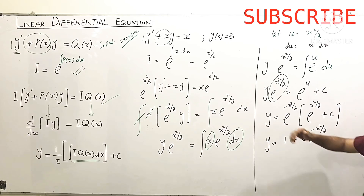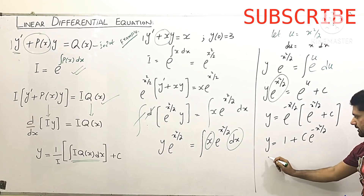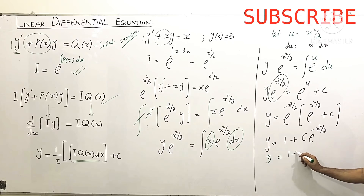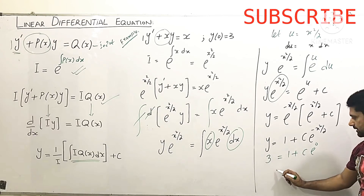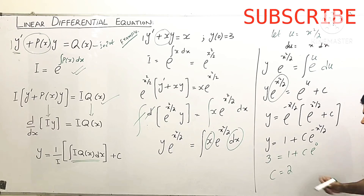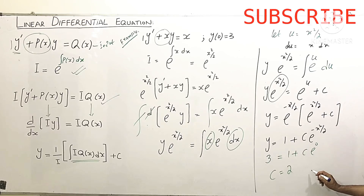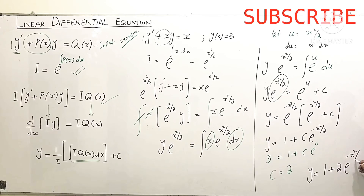Now we apply the initial condition: when y = 3 and x = 0, we get 3 = 1 + C·e^0 = 1 + C, so C = 2. Substituting back, our solution is y = 1 + 2·e^(-x²/2), and this is our general solution.